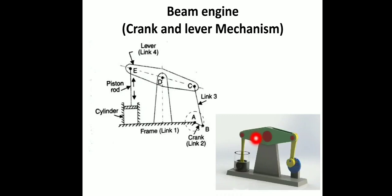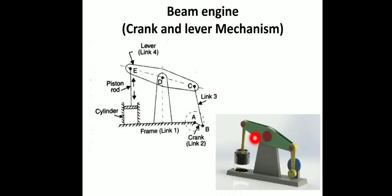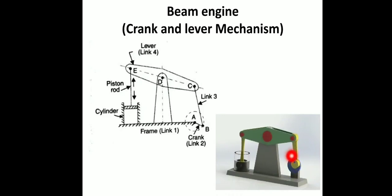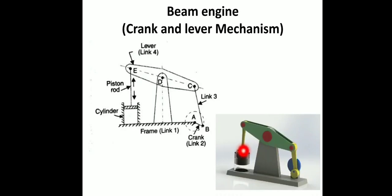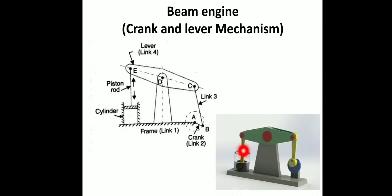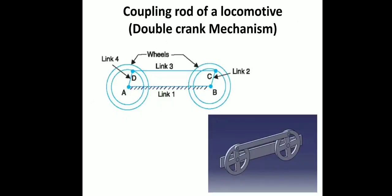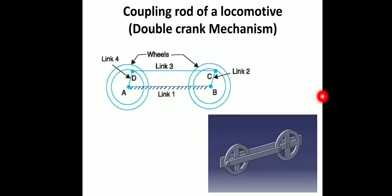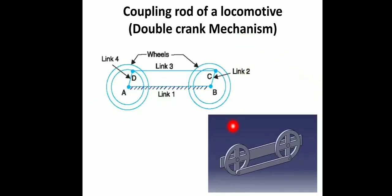This is the working principle of the beam engine — we are giving input here. Now, the second inversion is the coupling rod for a locomotive.